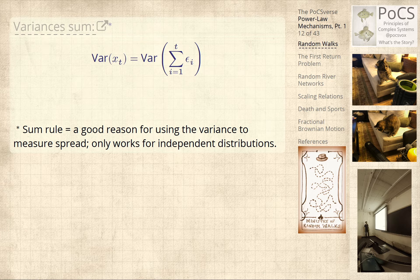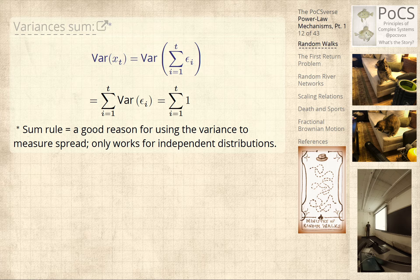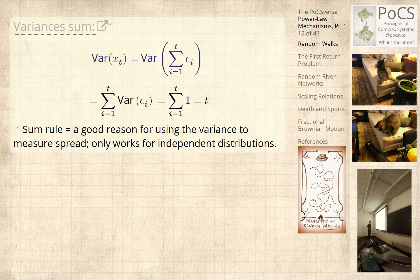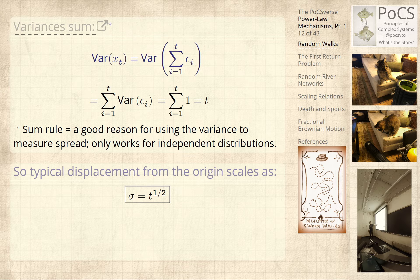We can sum the variances — this is a good reason for using variances. The variance of the sum is the sum of the variances. The variance is one: it's a half times one squared plus a half times minus one squared. That's the second moment; the first moment is zero. So the variance is T, and then the standard deviation is T to the half. This appears in nature a lot. The standard deviation is growing like the square root of T. And if you find a power greater or smaller, you talk about super-diffusive or sub-diffusive behavior.